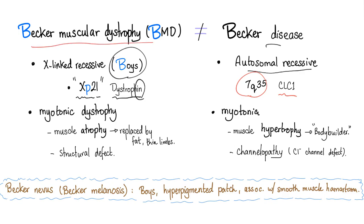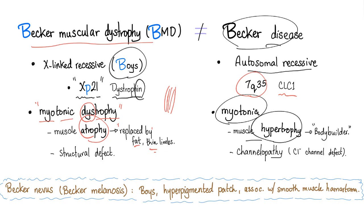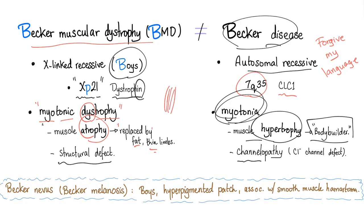In Becker muscular dystrophy, there is myotonic dystrophy — myo means muscle, tonic is the tone of the muscle, and dystrophy means difficulty growing, basically atrophy. The muscle gets replaced by fat, so the extremity looks very thin because it's devoid of muscle. Contrast that with Becker disease: you have myotonia with muscle hypertrophy — the kid looks like a bodybuilder. That's the key difference.